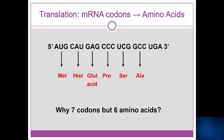So, our mRNA transcript has now been translated into a polypeptide sequence. We can see that our transcript had seven codons, but there are only six amino acids. Why is that? Right — the stop codon, UGA, does not correspond with an amino acid. So this tiny protein is only six amino acids long.